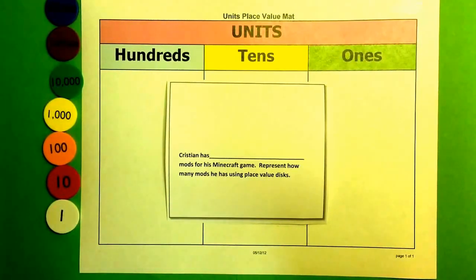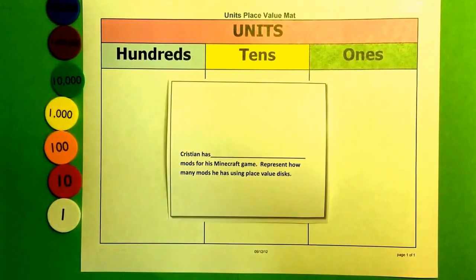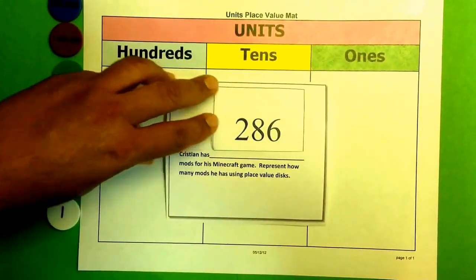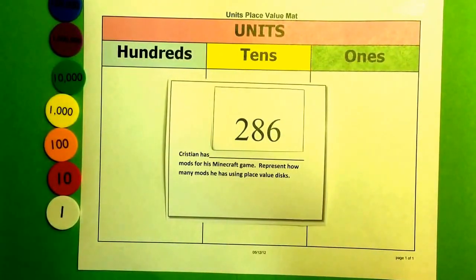The problem says, Christian has blank mods for his Minecraft game. Represent how many mods he has using place value disks. You can use number cards or you can use number cubes for students to create their numbers.